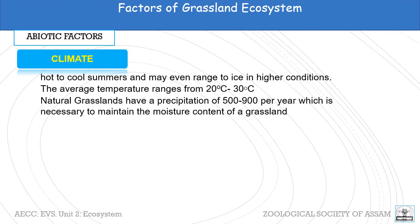One of the important abiotic factors is climate. The average temperature ranges from 20 degrees centigrade to 30 degrees centigrade in a grassland, and they have a considerable amount of rainfall with a precipitation of 500 to 900 mm per year, which is necessary to maintain the moisture content of the grassland.